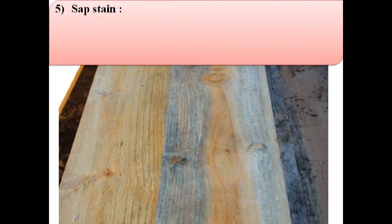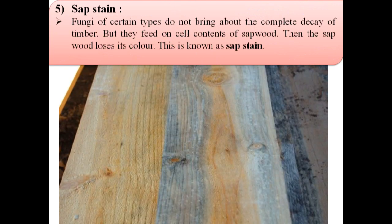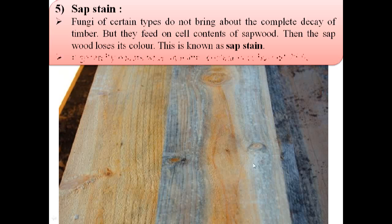Fifth defect due to fungi is sap stain. Fungi of certain types do not bring about the complete decay of timber but they feed on cell contents of sap wood. Then the sap wood loses its colour. This is known as sap stain. This sap stain generally occurs when moisture content goes beyond 25%.